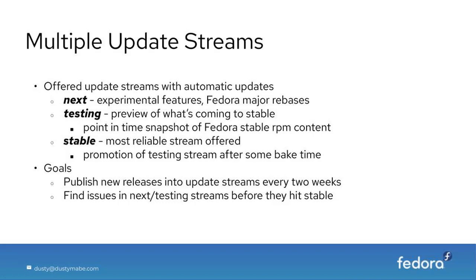For example, when we switch from Fedora 32 to Fedora 33, that will happen in Next first. It's an opportunity for us to put breaking changes — or possibly breaking changes — in there and get them tested. Testing is basically a preview of what's coming to stable; it's a point-in-time snapshot of Fedora stable RPM content that will go directly into Stable in two weeks if we don't find issues. The goals are to publish new releases into update streams every two weeks and find and fix issues so they don't hit the Stable stream.